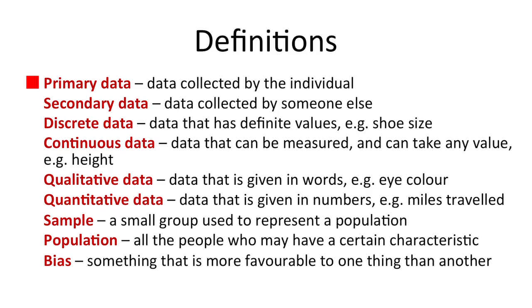First of all we have primary data. Primary data is data that's been collected by the individual. Secondary data however is data that's been collected by somebody else.